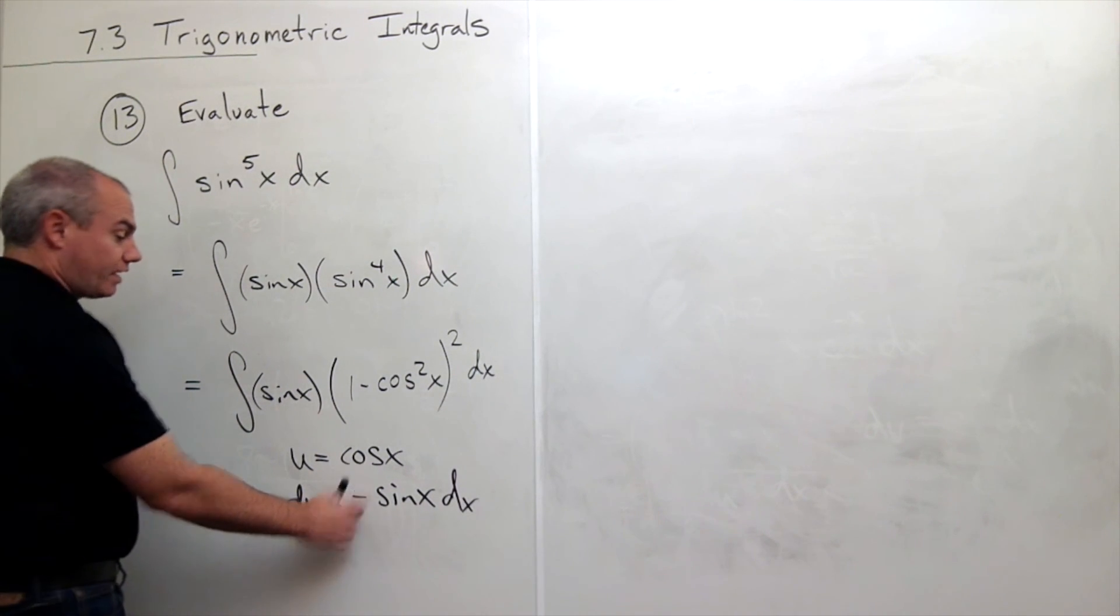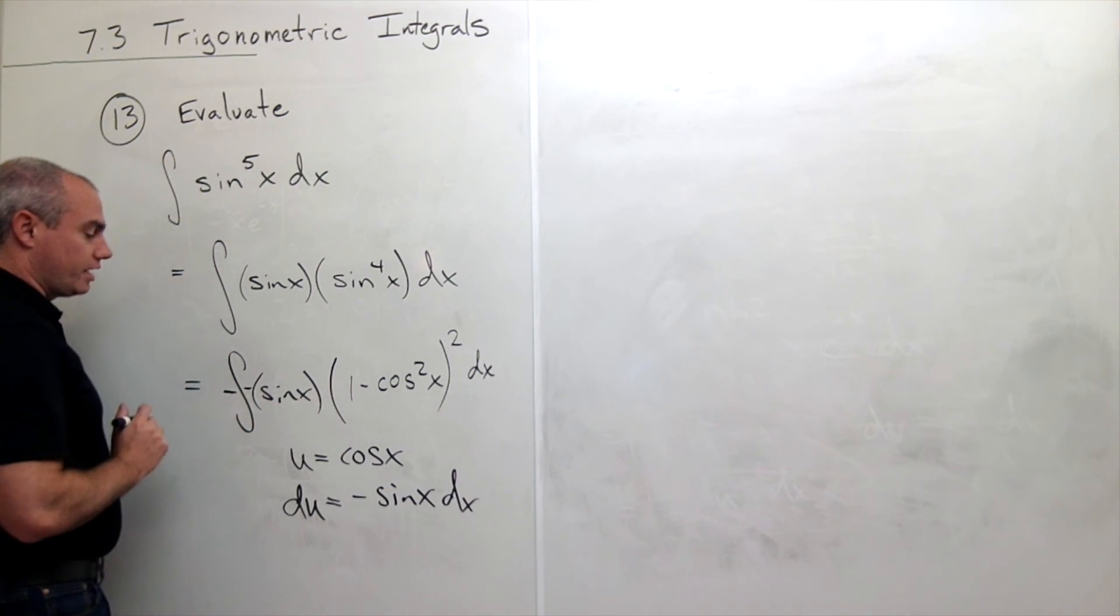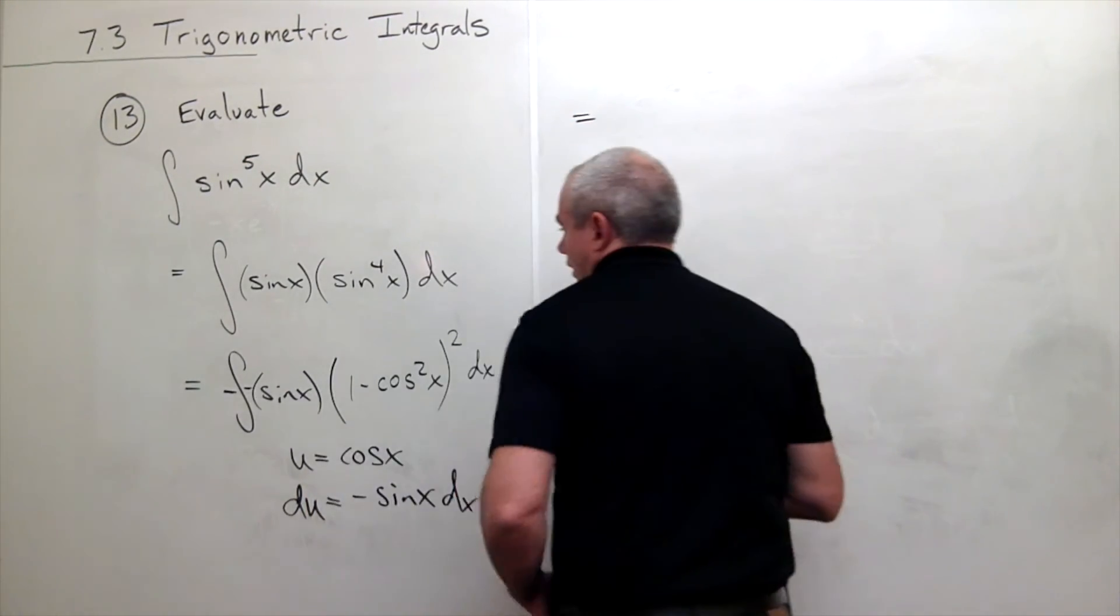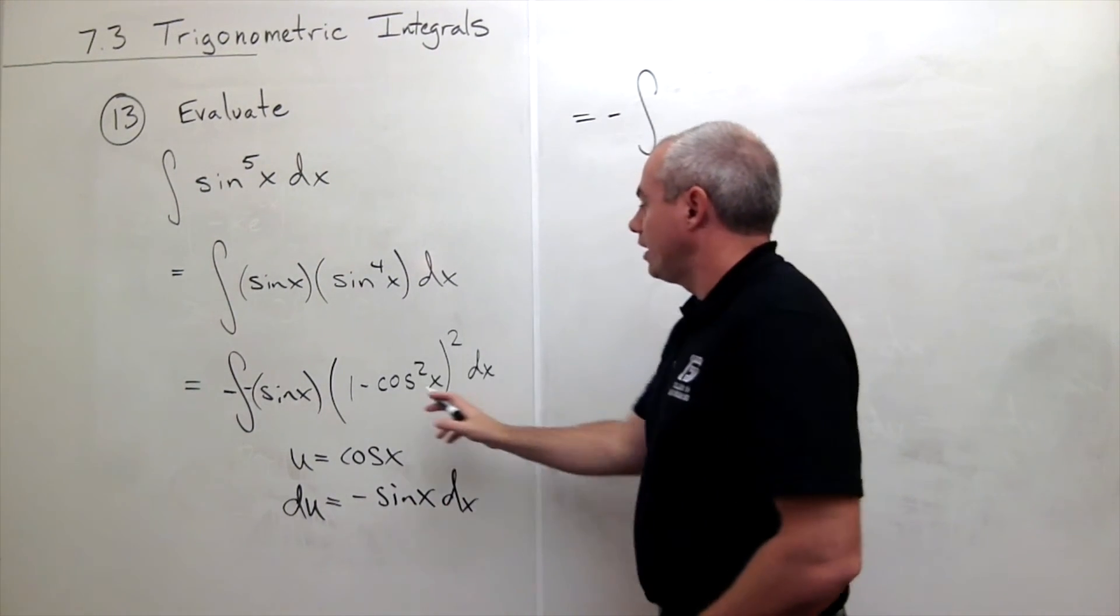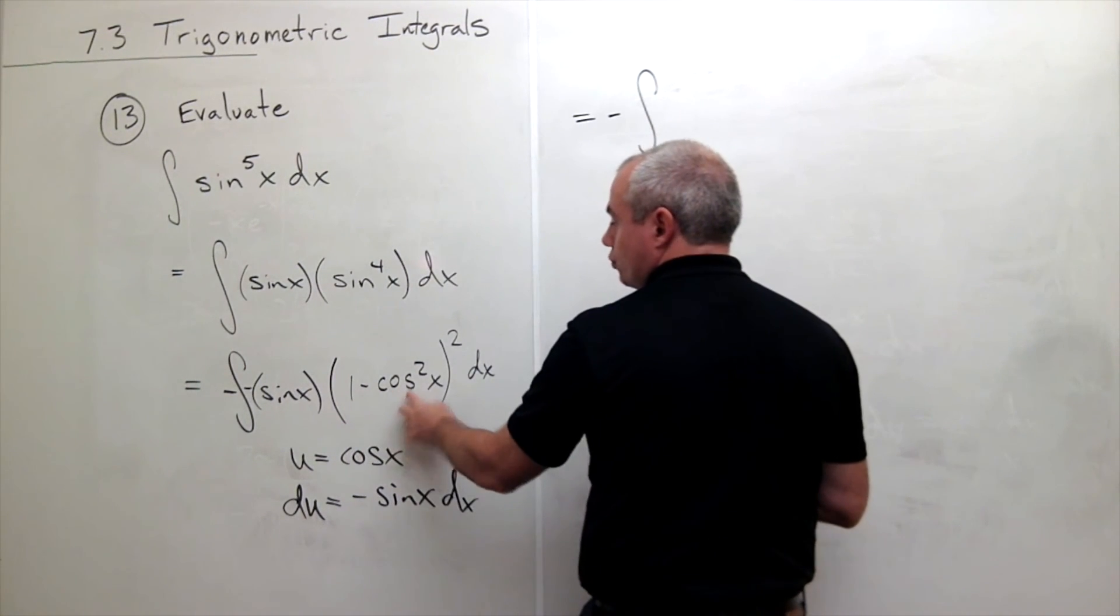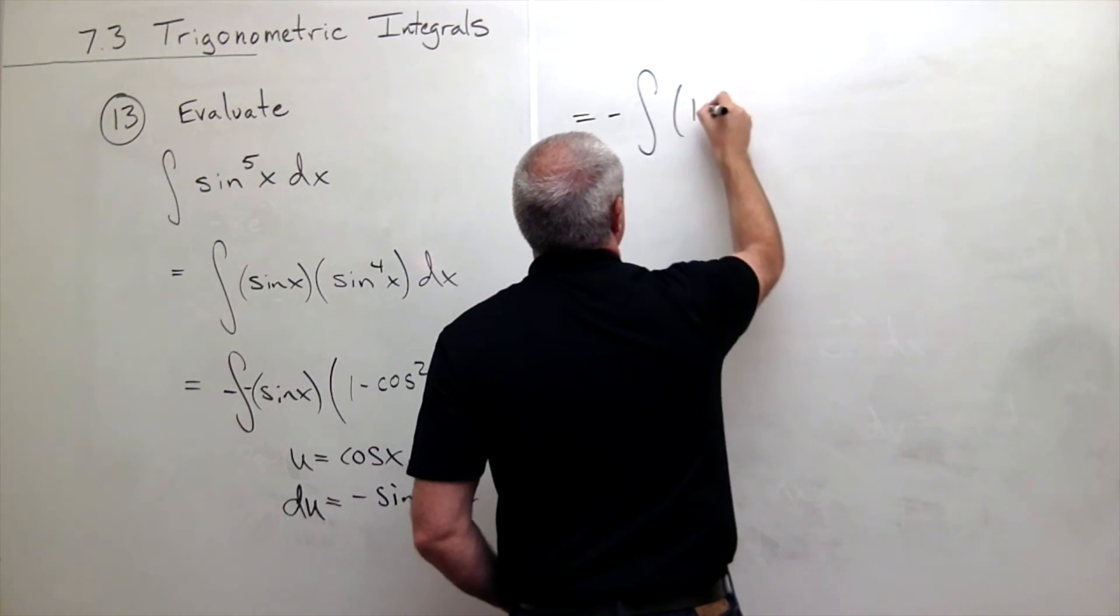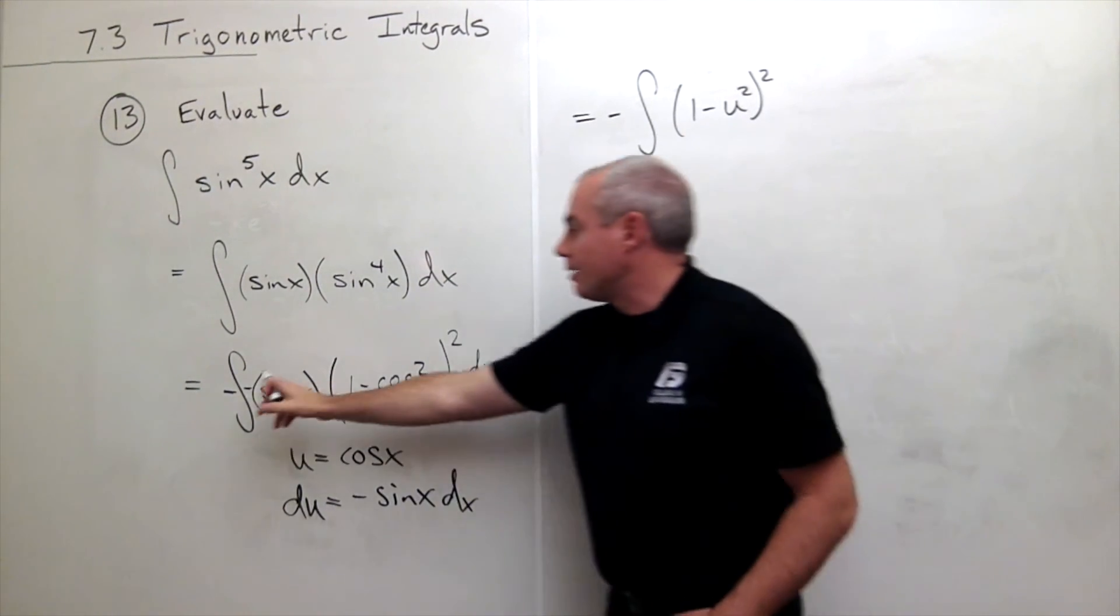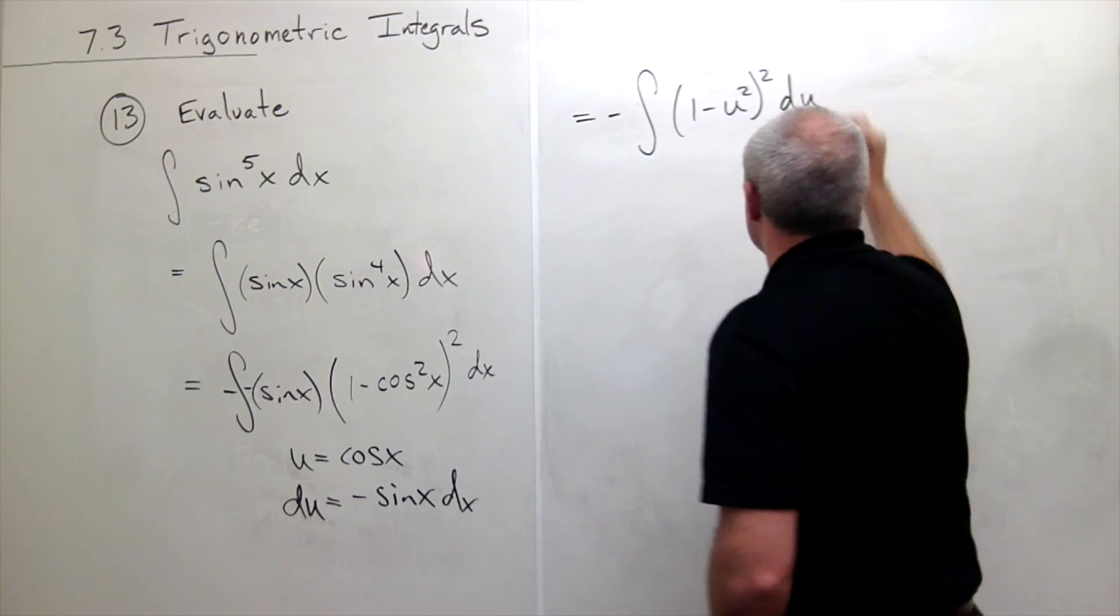But I do need a negative sine of x, not a positive one. So I'll put a negative in here, which means I also need a negative outside the integral. And now let's rewrite. The negative is still outside of the integral. And now I have the integral of one minus u squared quantity squared, and then the minus sine x dx all is du.